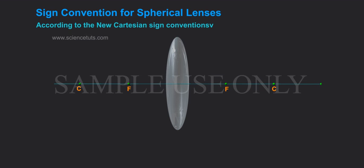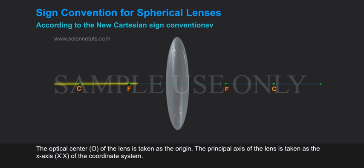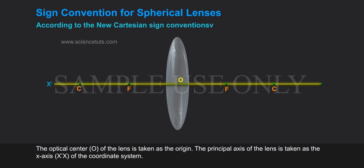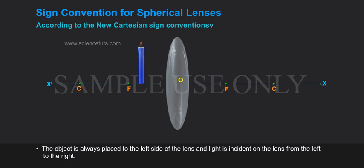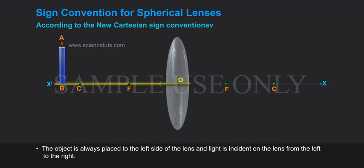According to the new Cartesian sign conventions, the optical center O of the lens is taken as the origin. The principal axis of the lens is taken as the x-axis of the coordinate system. The object is always placed to the left side of the lens and light is incident on the lens from the left to the right.